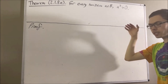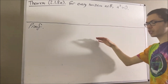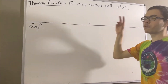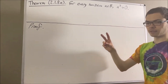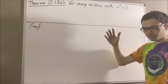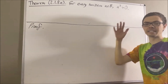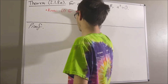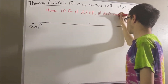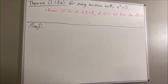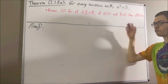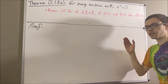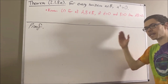Before we get into proving the theorem, we're going to use two facts. The first fact is that for every two real numbers a and b, if a is greater than zero and b is greater than zero, then a times b is greater than zero. The second fact is that for every real number a, the negative of a is greater than zero if and only if a is less than zero.